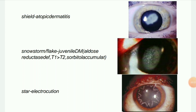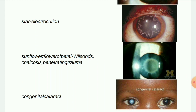Next image: Star/electrocution cataract. Researchers recount the case of an electrician who, after sustaining a 14,000-volt shock to his left shoulder, presented with bilateral stellate anterior subcapsular opacities of the lens — a star-burst shaped cataract. This is due to electric shock.